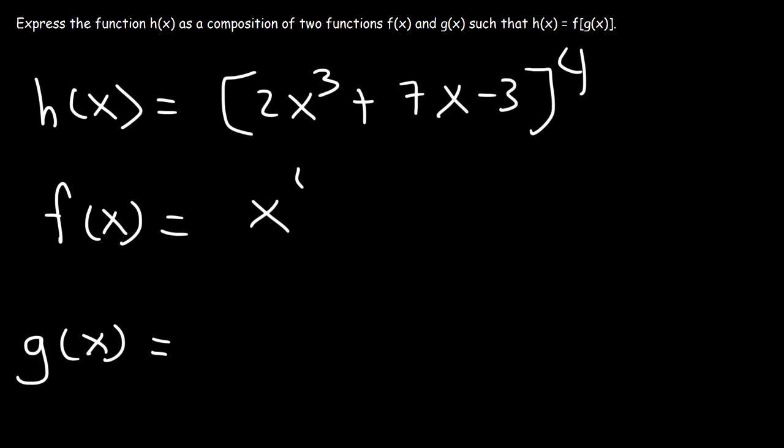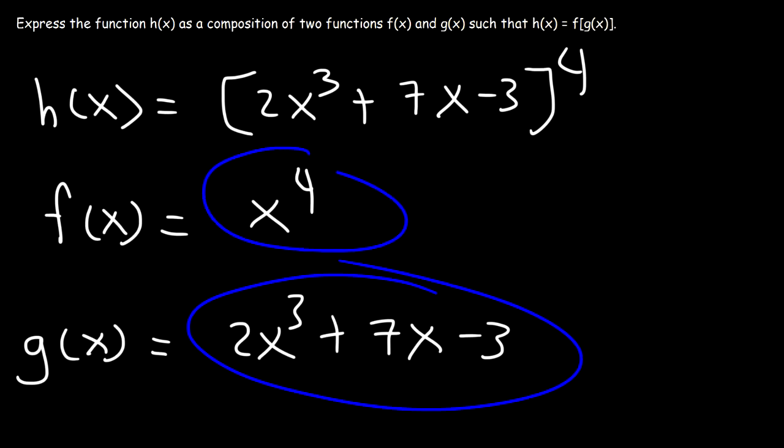On the outside, it's x to the 4th power. On the inside, 2x cubed plus 7x minus 3. And there you go. That's g of x and f of x.